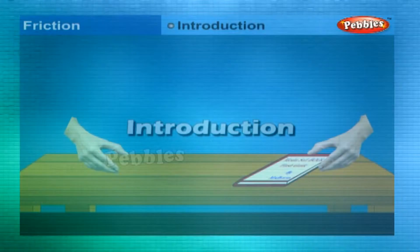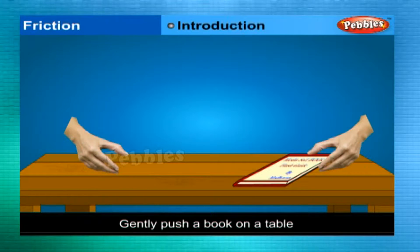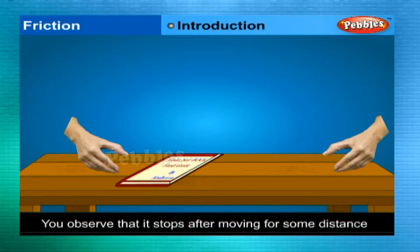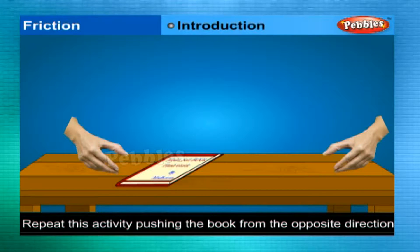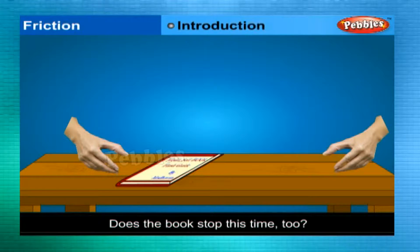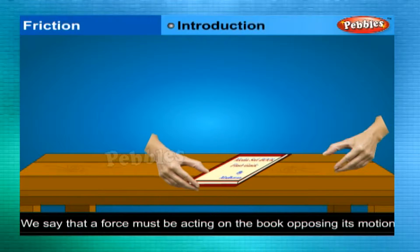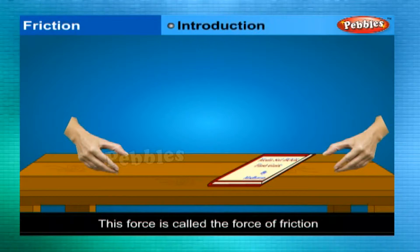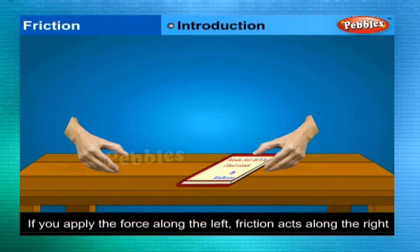Gently push a book on a table. You observe that it stops after moving for some distance. Repeat this activity, pushing the book from the opposite direction. Does the book stop this time too? We say that a force must be acting on the book, opposing its motion. This force is called the force of friction. If you apply the force along the left, friction acts along the right.